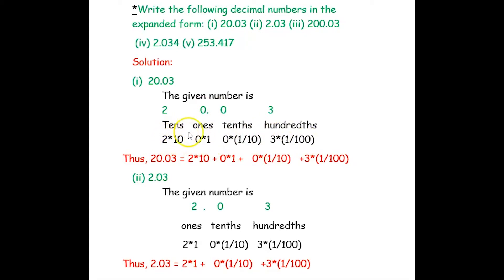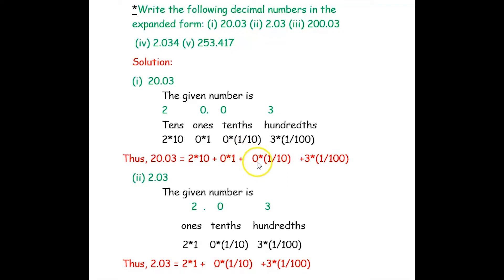So 20.03 represents 2 tens, 0 ones, 0 tenths, and 3 hundredths. We write: 2 × 10, plus 0 × 1, plus 0 × 1/10, plus 3 × 1/100. So the expanded form of 20.03 is 2 × 10 + 0 × 1 + 0 × (1/10) + 3 × (1/100).